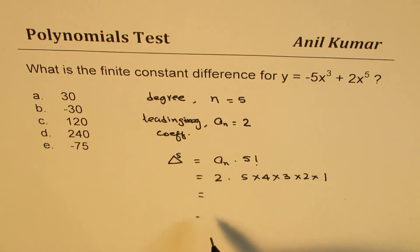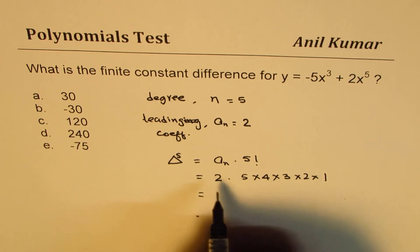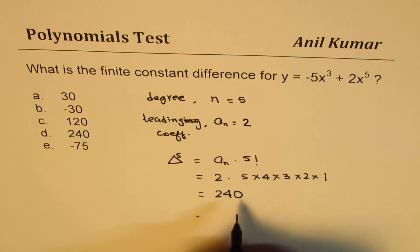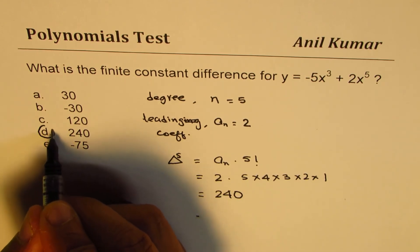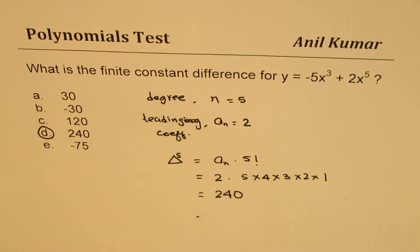So 5 times 4 is 20, 20 times 3 is 60, 60 times 2 is 120, twice 120 is 240. So without calculator you can easily find this value, D: 240 is the right answer.